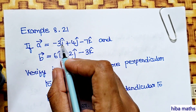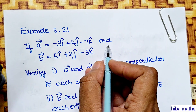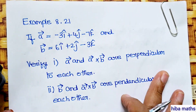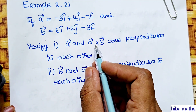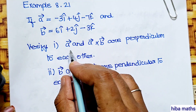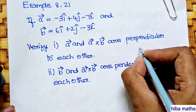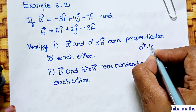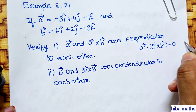If A vector is equal to minus 3i plus 4j minus k and B vector is equal to 6i plus 2j minus 3k, verify A vector and A vector cross B vector are perpendicular to each other. A vector dot A vector cross B vector is equal to 0 — prove it.